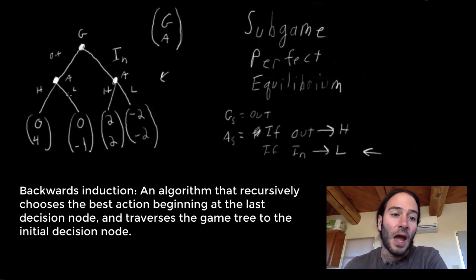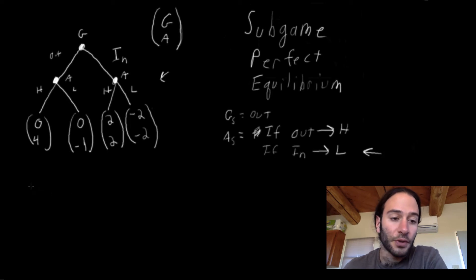So let's do this for Apple. Apple's strategy under backward induction says, if Google plays out, then what would it pick? Would it pick the high price action or the low pricing action? Well, it prefers four over negative one. So it would say, then play H.